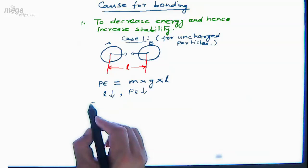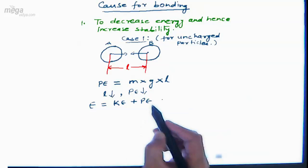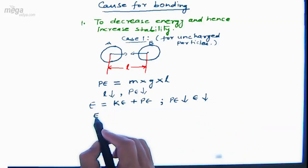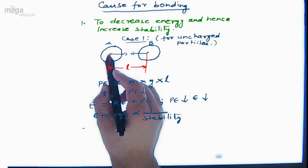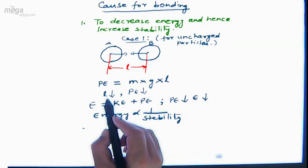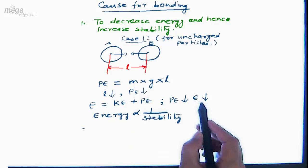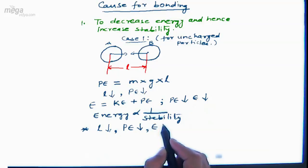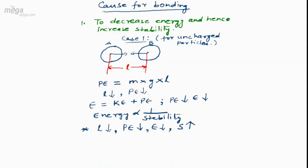If l decreases, then potential energy also decreases. Since total energy = kinetic energy + potential energy, a decrease in potential energy decreases the total energy. Since energy is inversely proportional to stability, decreasing energy increases stability. So we conclude: during bonding, l decreases → potential energy decreases → total energy decreases → stability increases. This verifies that bonding decreases energy and increases stability.